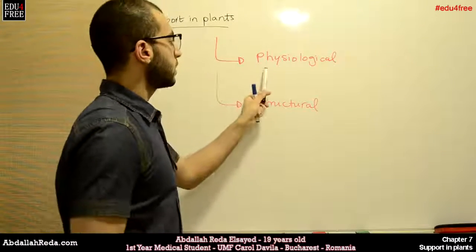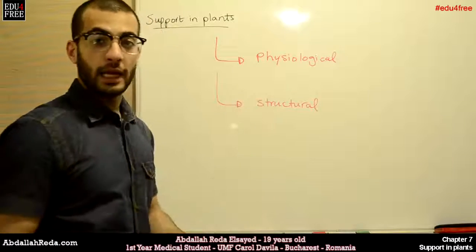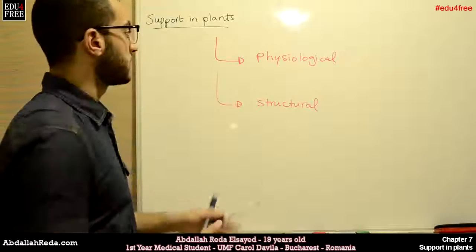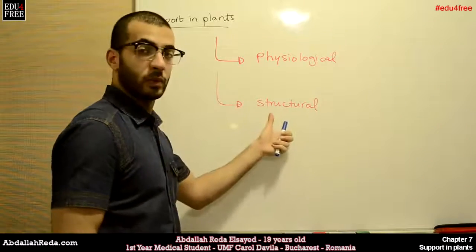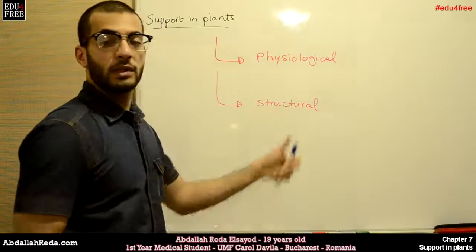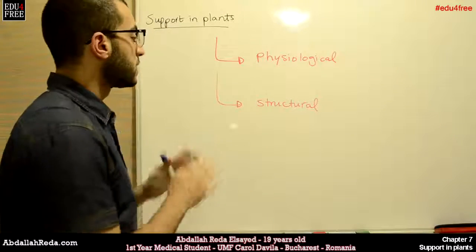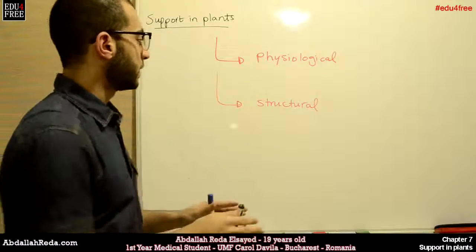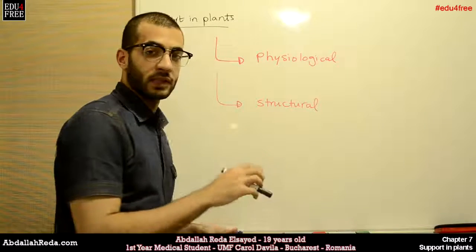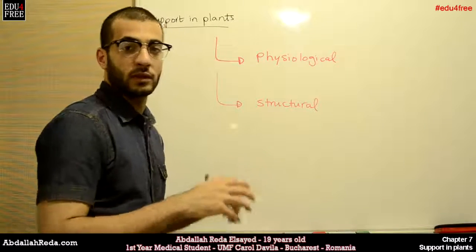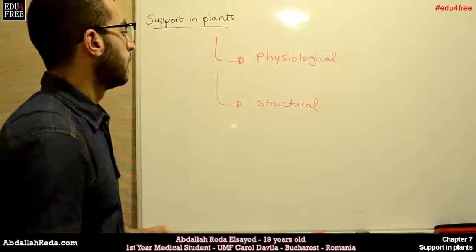The physiological support depends on the physiological state of the cells inside the plant, while the structural support depends on the deposition of certain materials that strengthen the walls of the cells themselves or the whole plant.